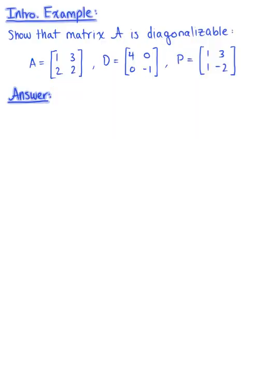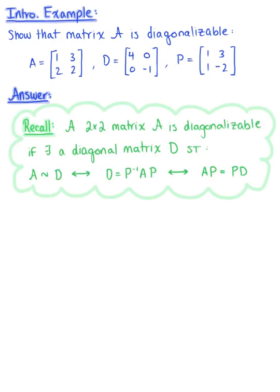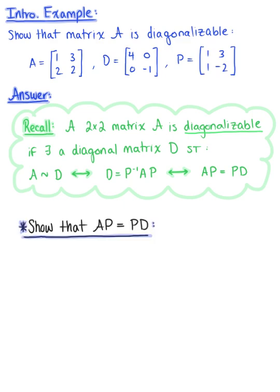Show that matrix A is diagonalizable. We are given three 2 by 2 matrices: matrix A, the diagonal matrix D, and matrix P. By definition, a 2 by 2 matrix A is diagonalizable if there is a diagonal matrix D such that matrix A and matrix D are similar. So let's confirm that matrix A and matrix D are in fact similar by showing that matrix A times matrix P is equal to matrix P times matrix D.